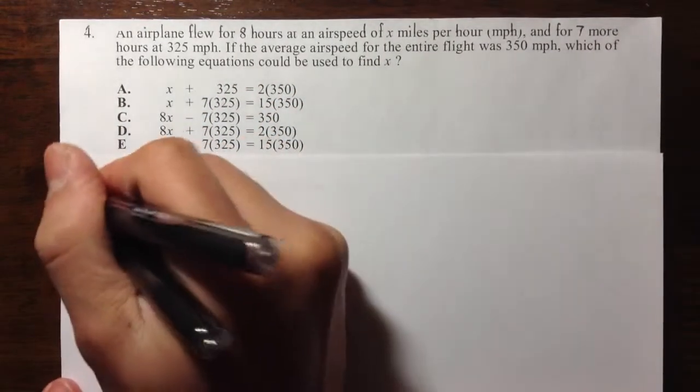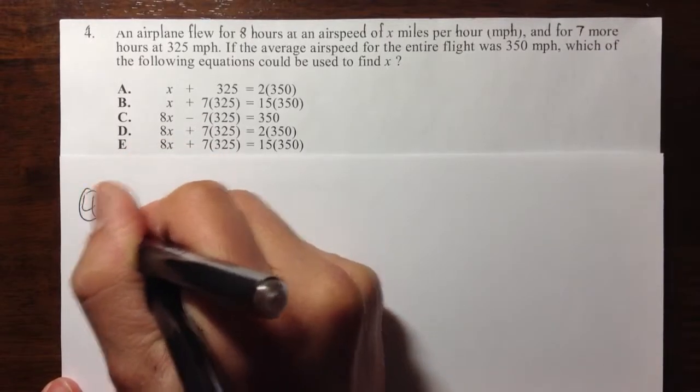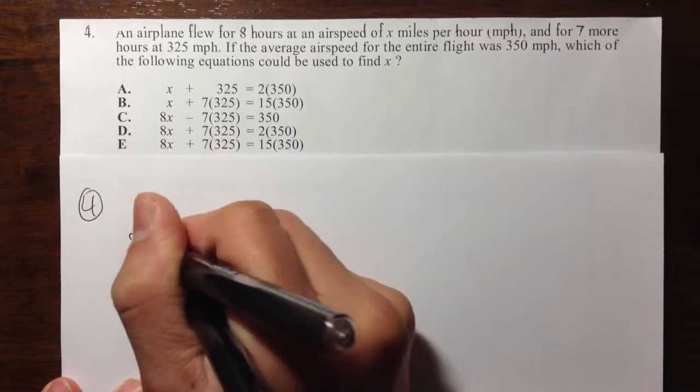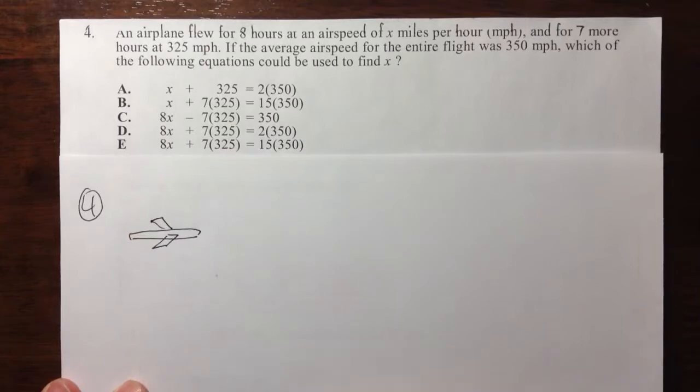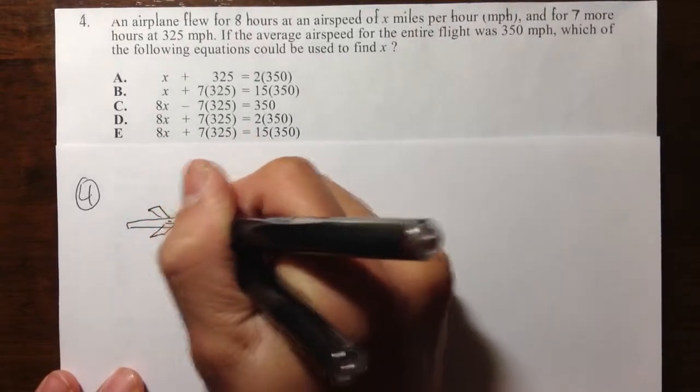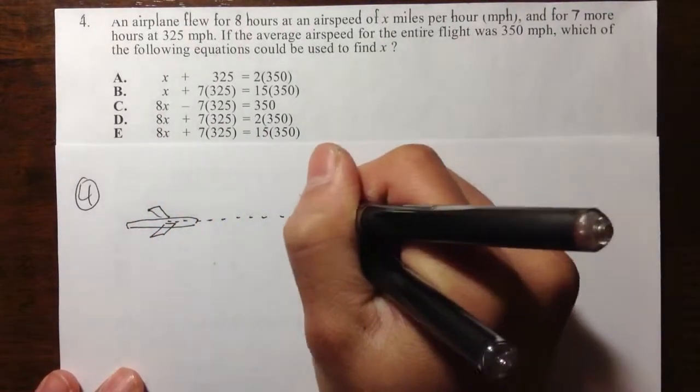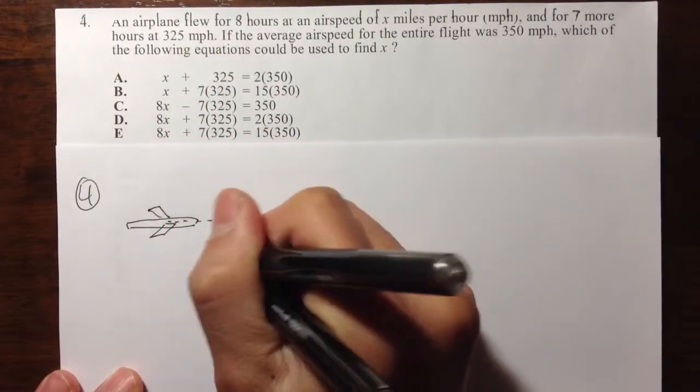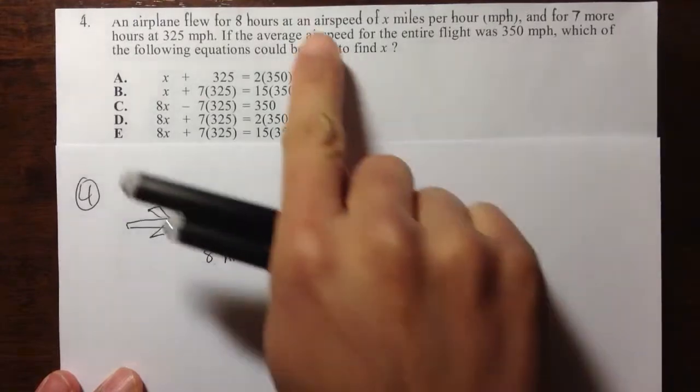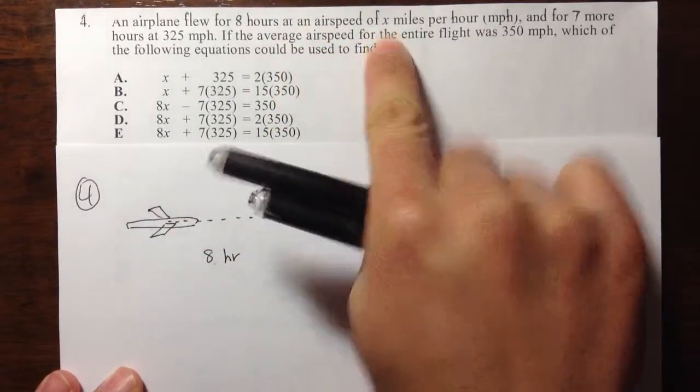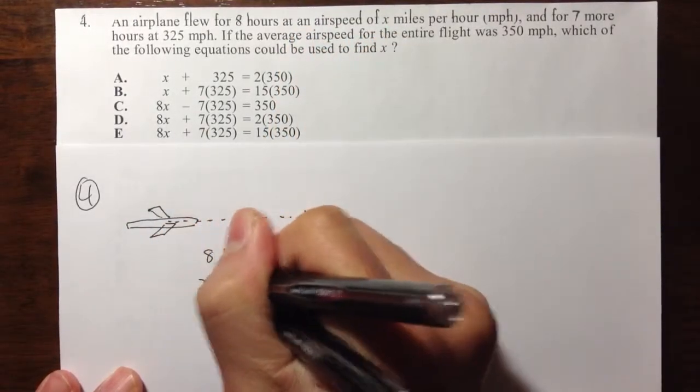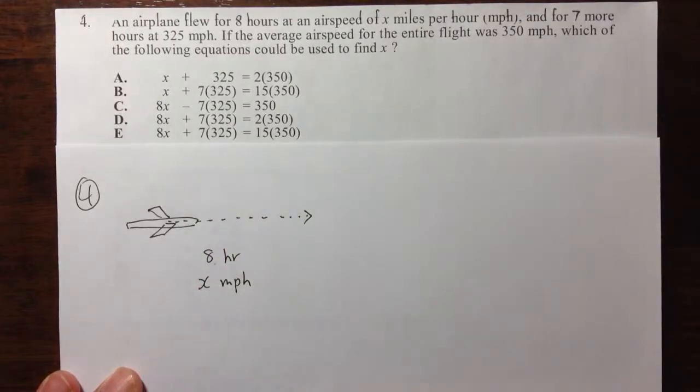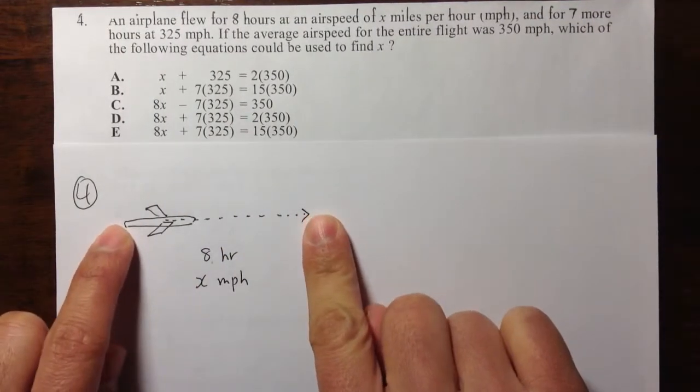So let me just draw some picture to illustrate what's going on. First of all, I have my airplane, like this. And it's going, flying, let's say, going this way. And it says it flew for 8 hours. So let me just make some notes. This is 8 hours. And the speed is x miles per hour.